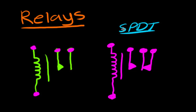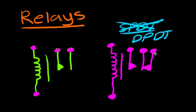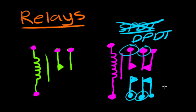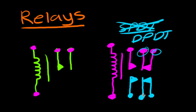We can also make this a double pole double throw relay by just adding another identical set of terminals. So if we draw an identical set right below, this becomes a double pole double throw relay. When we activate the magnet, two sets of terminals become connected simultaneously. And when electricity isn't running through the electromagnet, the other two pairs of terminals are connected. So they're essentially an electronically operated switch.